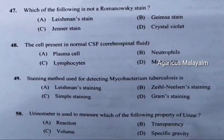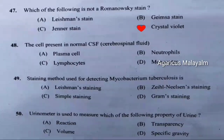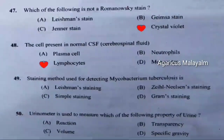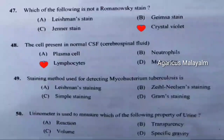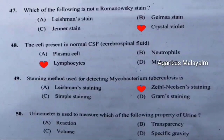Forty-seventh question: Which of the following is not a Romanowski stain. Correct answer is option D — crystal violet. Forty-eighth question: The cell present in normal CSF. Correct answer is option C — lymphocytes. Forty-ninth question: Staining method used for detecting Mycobacterium tuberculosis is. Correct answer is option B — Ziehl-Neelsen staining.